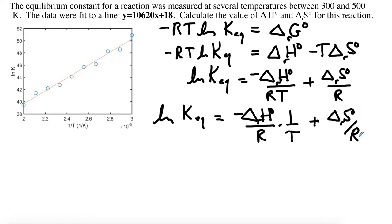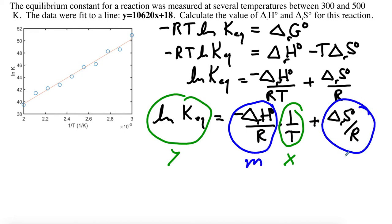If you write it like this, you can emphasize that we could call this Y, and if we do that, we can call this X. Those are the things we're going to graph. That's going to leave us with this being the slope M and this being our Y intercept B, so we end up with Y equals MX plus B. This will be a straight line as long as the delta H standard and delta S standard are reasonably constant, and over small to medium temperature changes, they don't change very rapidly, so that's a good approximation.